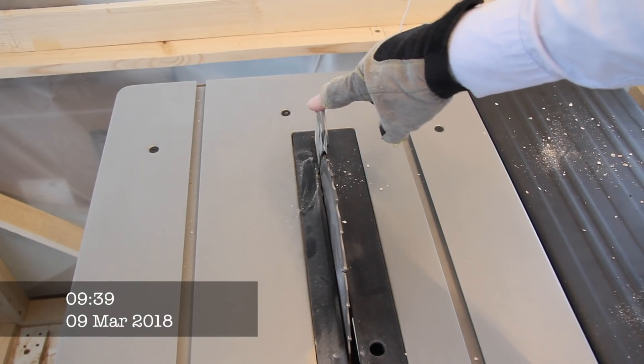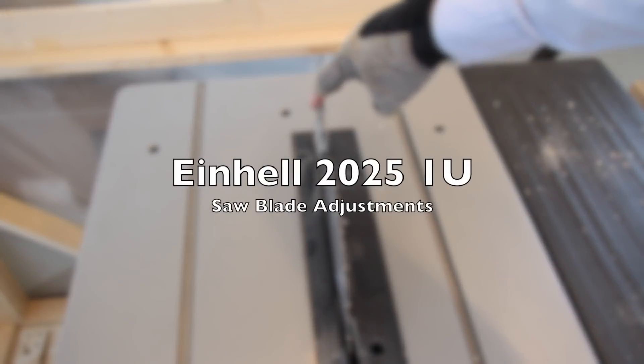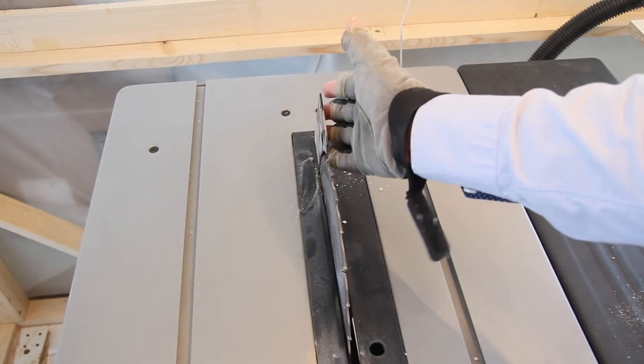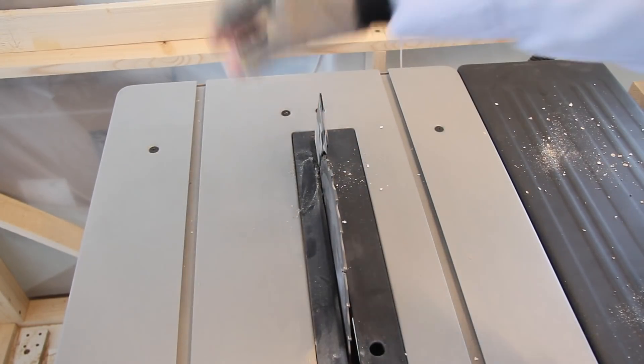Let's try to fix this with the Einhell table saw. It's probably my fault, but you see the riving knife and the whole blade is pushed to that side.